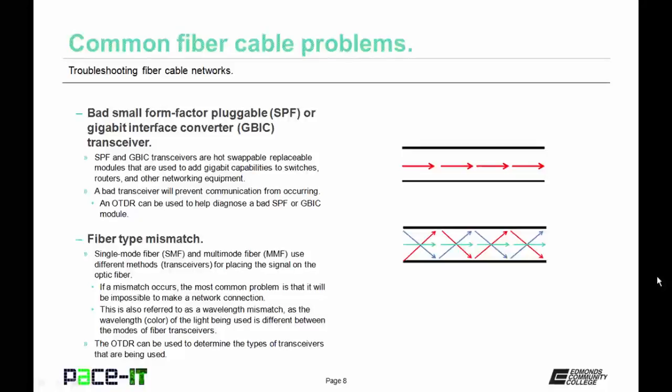It is possible to have a fiber type mismatch. Single mode fiber and multi-mode fiber use different methods for placing the signal on the optic fiber. If a mismatch occurs, the most common problem is that it will be impossible to make a network connection. This is also referred to as a wavelength mismatch, as the wavelength or color of the light being used is different between the modes of fiber transceivers. The OTDR can be used to determine the types of transceivers that are being used.